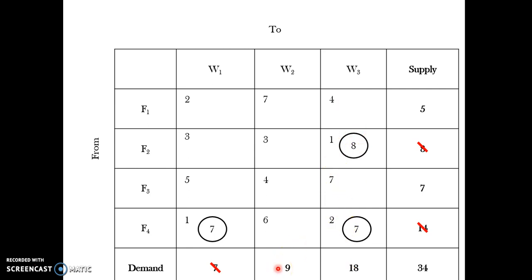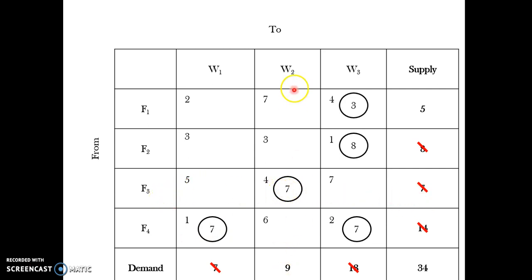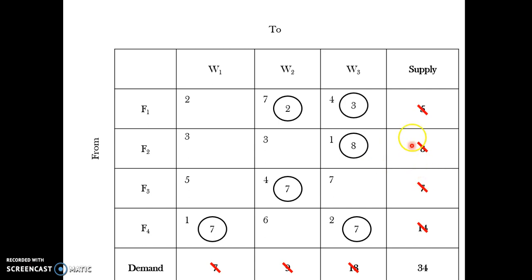I allocate 3 units from F1 to W3, fulfilling W3's demand entirely, and cross off W3. Then I look at F3→W2: F3 has 7 units and W2 requires 9 units. All 7 units from F3 go to W2. That leaves W2 with 2 units still needed, and F1 still has 2 units remaining. So I allocate those 2 units from F1 to W2, fulfilling both.